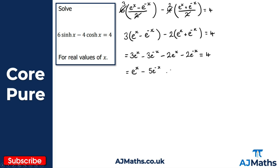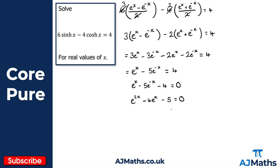I want to set this equation equal to 0, so I subtract 4 from both sides: e^x minus 5e^(-x) minus 4 equals 0. Now, minus 5e^(-x) is the same as minus 5 over e^x, so I don't want that fraction. I'll multiply through the full equation by e^x, giving e^(2x) minus 4e^x minus 5 equals 0. What I can recognise now is we have a disguised quadratic.